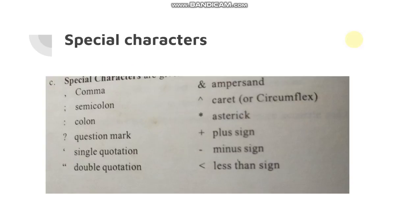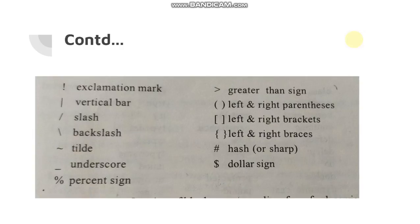Some of the special characters are as below: comma, ampersand, semicolon, carriage, colon, asterisk, question mark, plus sign, single quotation, minus sign, double quotation, less than sign, exclamation, greater than sign, vertical bar, left and right parenthesis, slash, left and right brackets, backslash, left and right braces, tilde, hash, underscore, dollar sign, percentage sign.